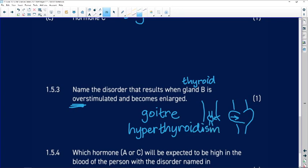So which is the disorder? The disorder is hyperthyroidism and the enlargement is the goiter.